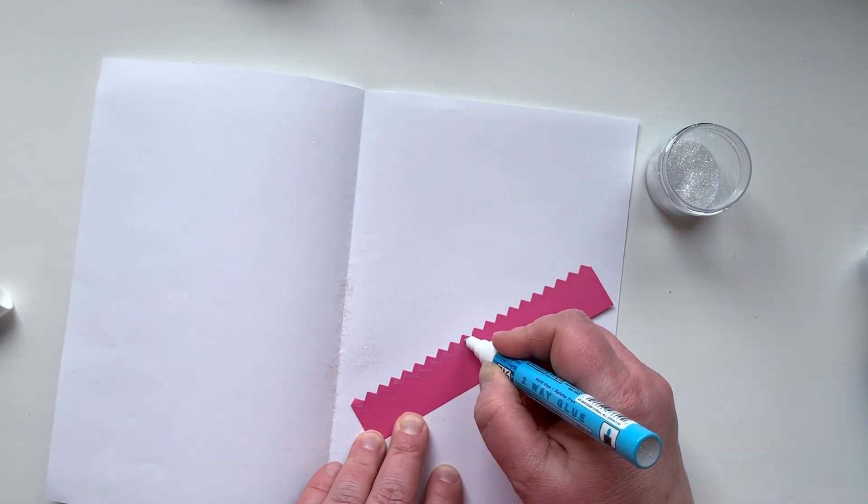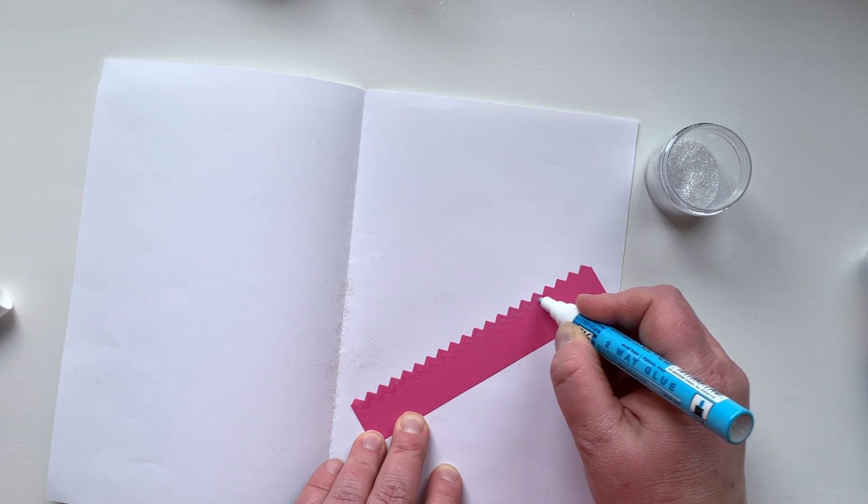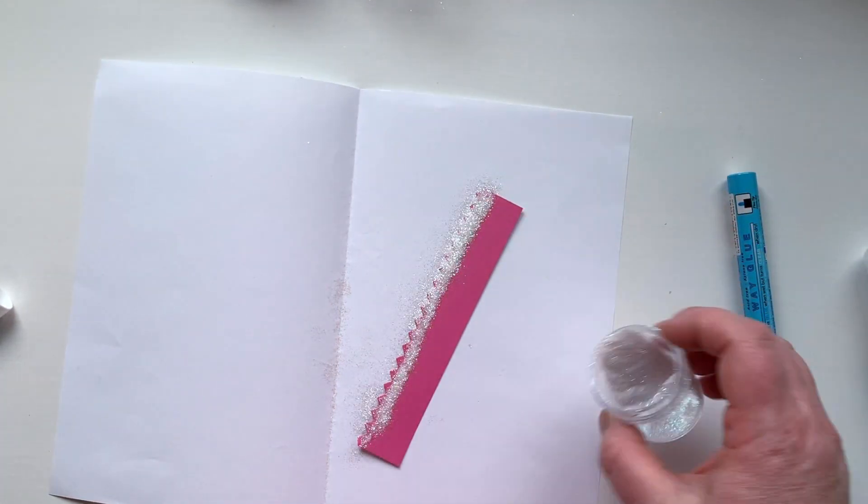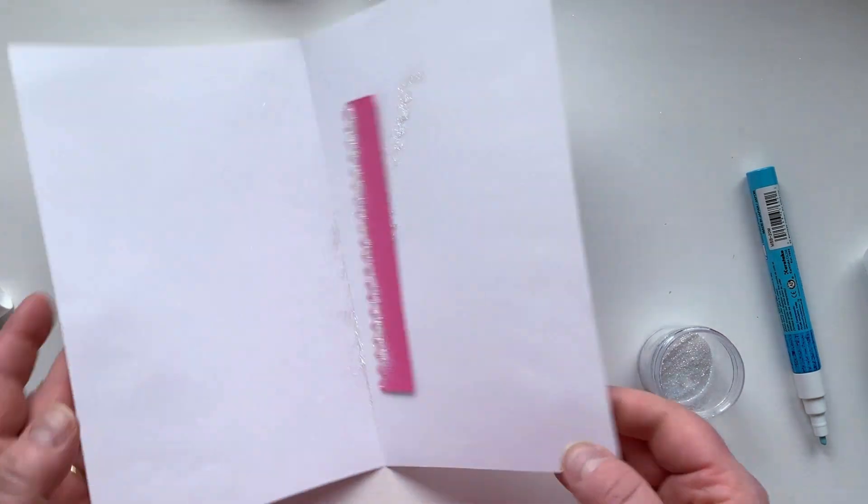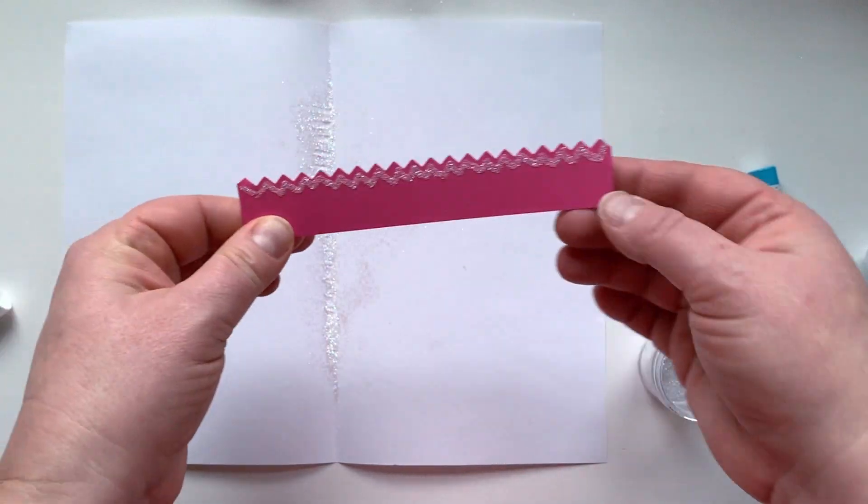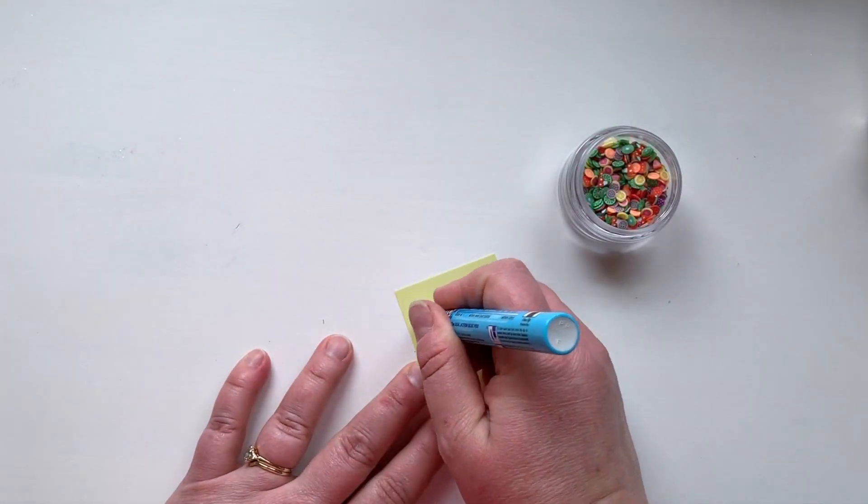Now I'm going to use the fine tip pen to add glitter to this decorative strip of cardstock. So I just drew the glitter on where I wanted it, sprinkled on the glitter, tap off the excess, and now I have a really nice line of glitter following that zigzag pattern.